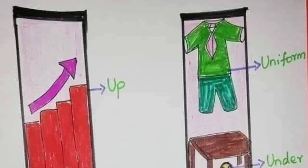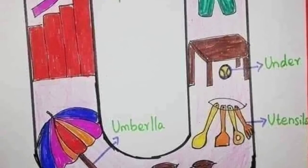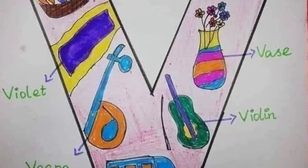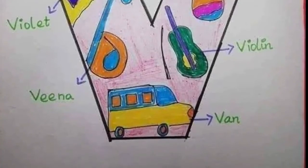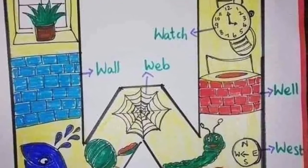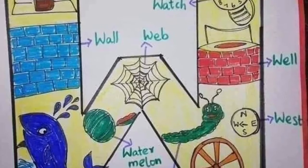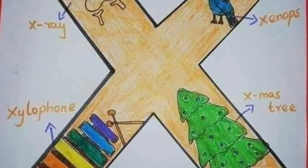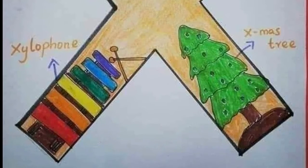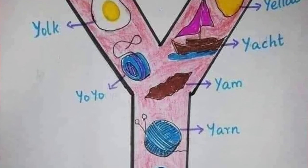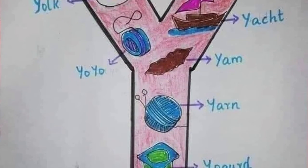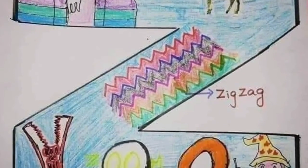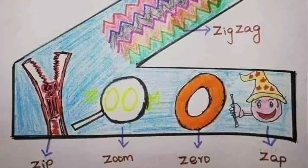U for uniform, V for band, W for bell, X for xylophone, Y for yo-yo, Z for zigzag.